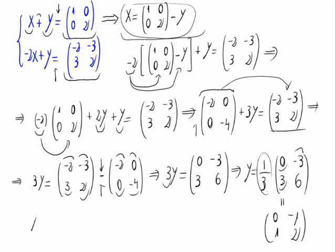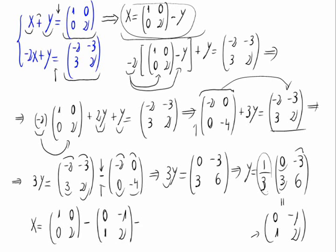As a consequence, x would be equal to the matrix 1, 0, 0, 2, minus y, which gives 0, minus 1, 1, 2. That equals: 1 minus 0 is 1, 0 minus minus 1 is 1, 0 minus 1 is minus 1, and 2 minus 2 is 0.